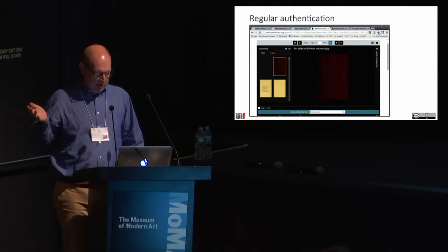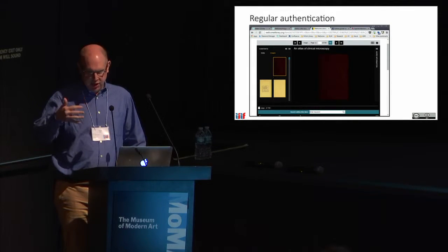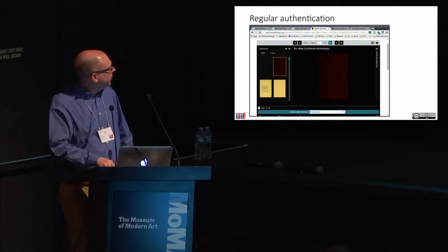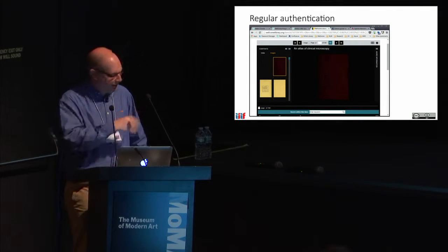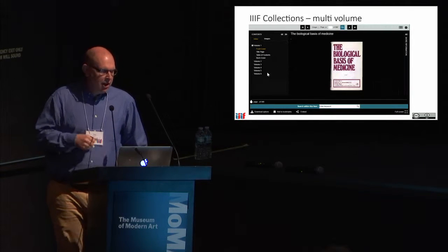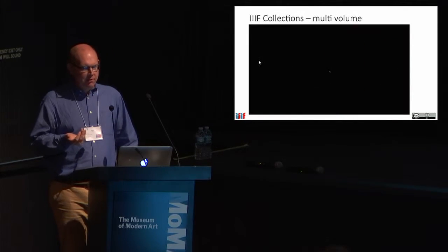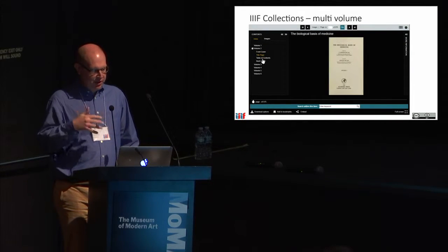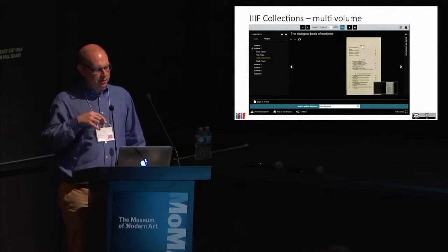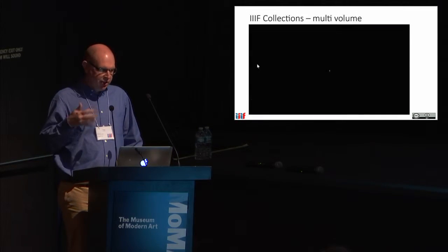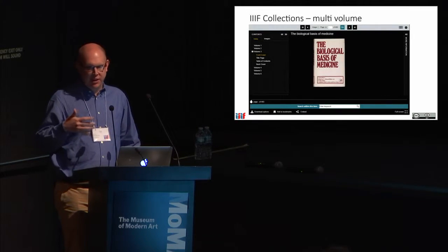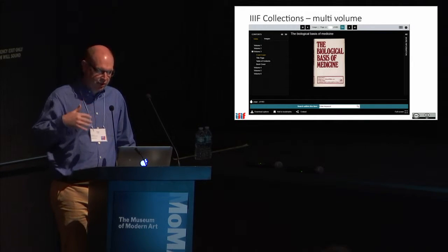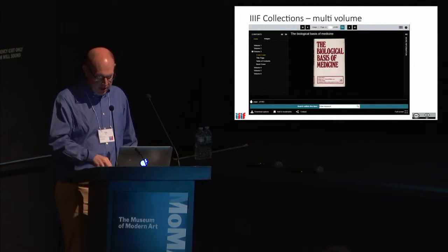When the process is orchestrated by the authentication API, the user ends up back in the viewer. Here is a multi-volume work modelled as a IIIF collection — a collection of six separate manifests. The Universal Viewer understands this is a conceptual whole work containing six separate volumes and can generate navigation to move across the collection structure as well as within each volume.